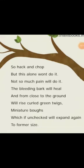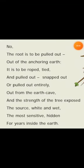Second answer: The poem says that a jab of a knife or chopping of boughs is not sufficient to bring a tree down. This may inflict pain but is not enough to kill it. The bleeding bark will heal with time. New green twigs will grow again and boughs chopped off will be replaced by new boughs — it will grow to its former size. Third answer: To kill a tree, one has to attack the roots by pulling them out of the earth. That is, the source of its existence has to be destroyed by taking it out of its place of security and stability. The root should be tied with a rope and pulled out entirely from its safe place below the earth, or it should be snapped out.